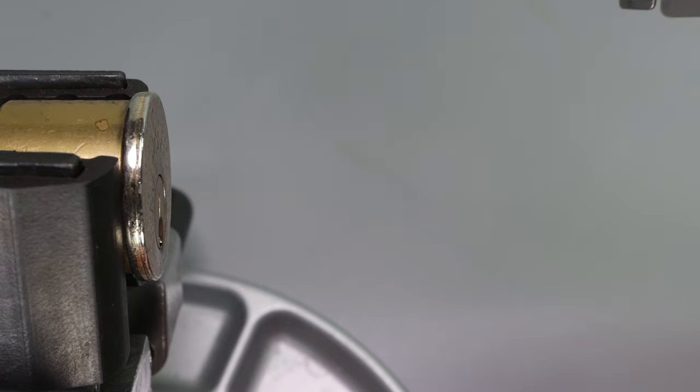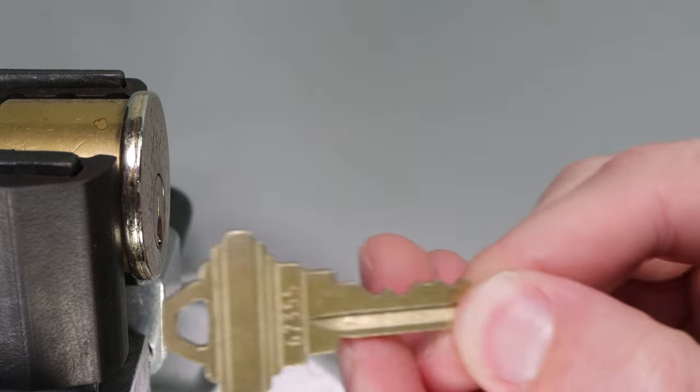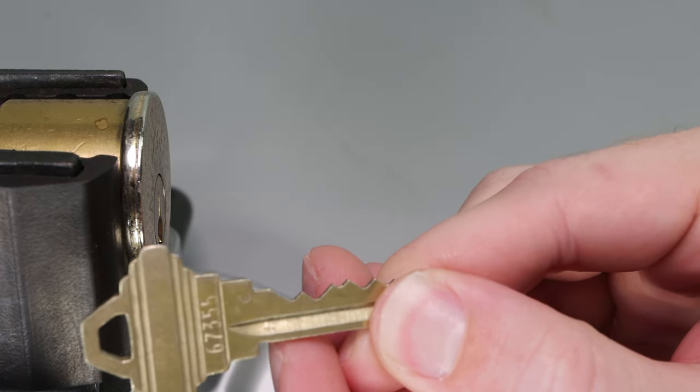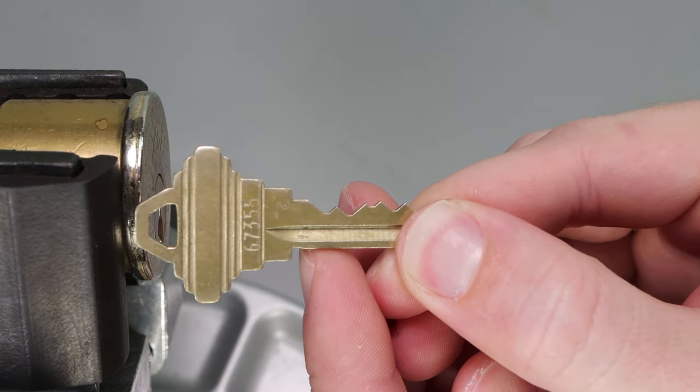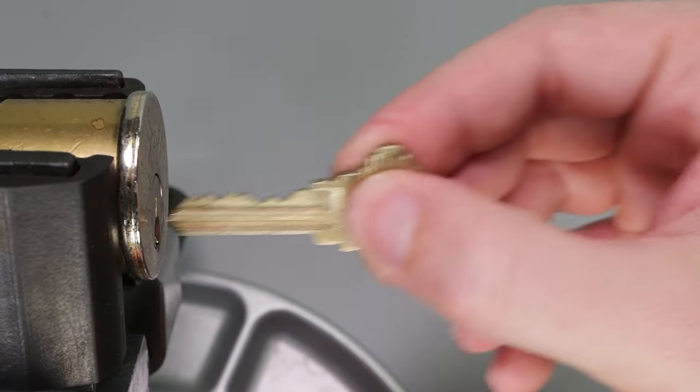But let's take out the tool. Let's lock the lock back up. And here is the key that the lock is pinned up to. And it does read 6, 7, 3, 5, 5. We were able to see that we were able to decode that. But let's just pop this in the lock and see that we did a job well done.